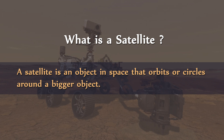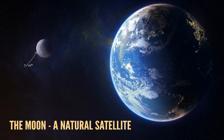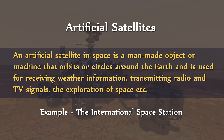With reference to this topic, you need to know about satellites. What is a satellite? A satellite is an object in space that orbits or circles around a bigger object. The bigger object may be our planet Earth or any other planet in the universe. Satellites are of two types. Number one, natural satellites. A natural satellite in space is made by nature and orbits or circles around a planet.